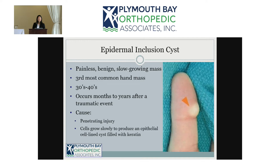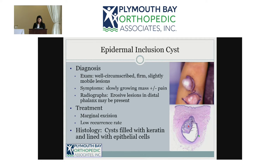Epidermal inclusion cysts are the third most common mass found in the fingers and usually occur after penetrating trauma — a laceration or puncture that pushes skin into the subcutaneous tissues, forming a mass. On exam you feel a round, firm, slightly mobile mass that is typically not painful. However, if it keeps growing it can start eroding bone, so on x-rays it can look worrisome even though it is very benign.